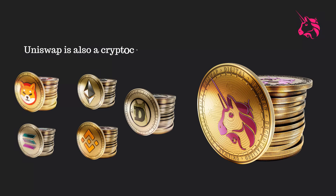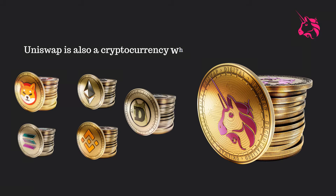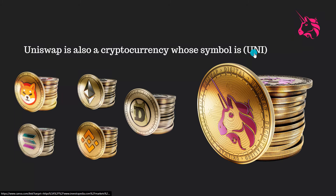As we all know, every single blockchain has its own cryptocurrency. Right now we have several popular cryptocurrencies like Dogecoin, Ethereum, Binance, and Solana. In the same way, Uniswap has its own cryptocurrency called UNI, and that's the symbol used to denote it.